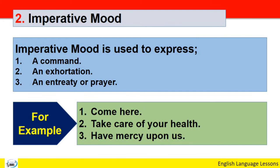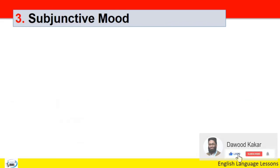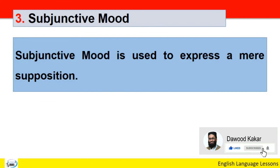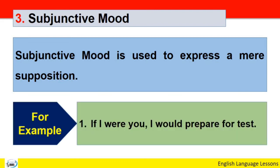Number three: Subjunctive mood. Subjunctive mood is used to express a mere supposition. Yeh ek mafroze ke expression ke liye, mafroze ko bayan karne ke liye istemal hota hai. For example: If I were you, I would prepare for test. Yahan pe ek doosre ke sath aap ne aap ko compare kiya jata hai, farz kiya jata hai ke agar main aap ki jagah pe hota to main test ki preparation karta, tayyari karta. Yeh subjunctive mood hai verb ka jo ke mehaz mafroze ko zahir karta hai.